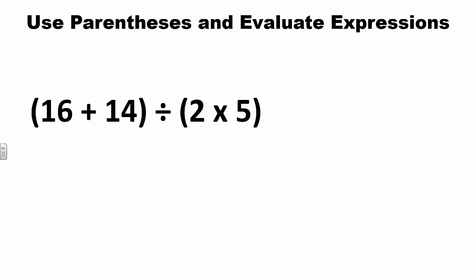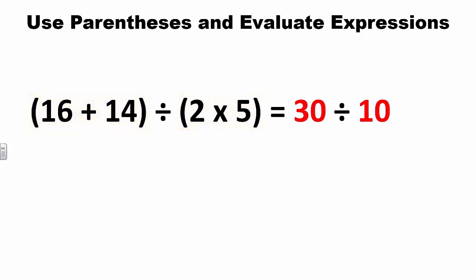Let's look at another example: (16 + 14) ÷ (2 × 5). We start by computing 16 plus 14 and 2 times 5 since they are grouped together. 16 plus 14 equals 30 and 2 times 5 equals 10. 30 divided by 10 gives a quotient of 3.